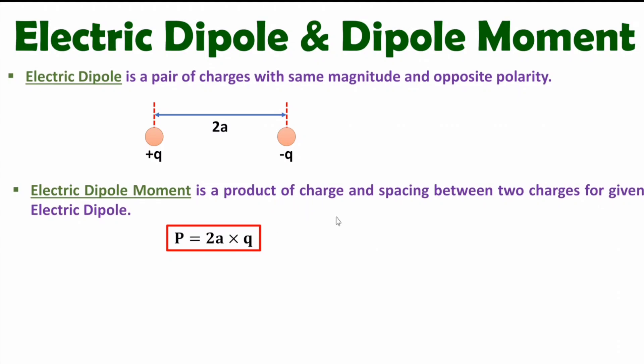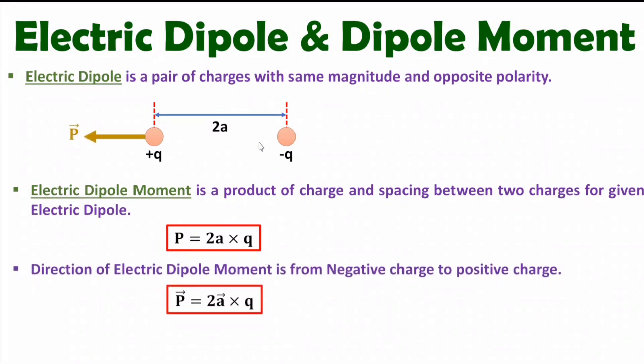One should know the direction of electric dipole moment. Dipole moment has direction from negative charge to positive charge. So here you can observe direction of electric dipole moment is happening in the direction from negative to positive charge.